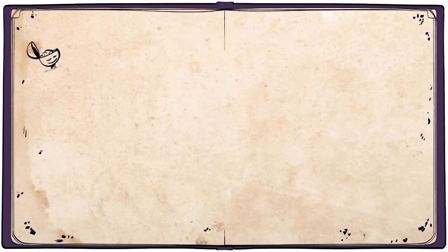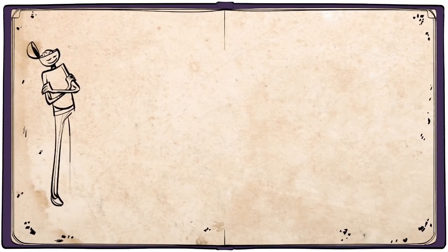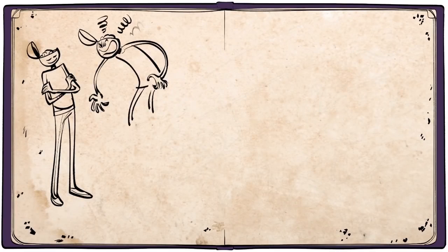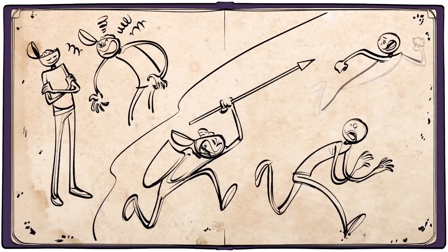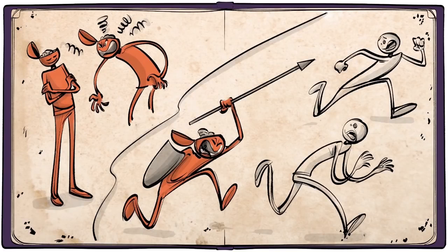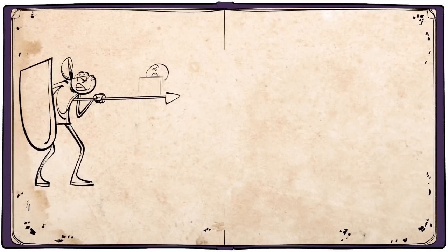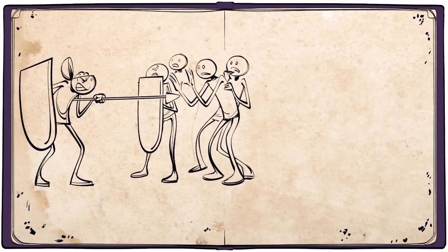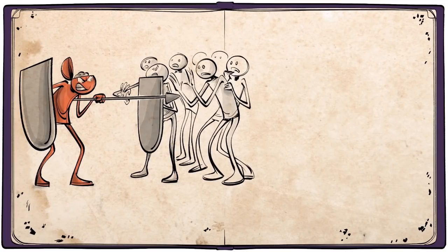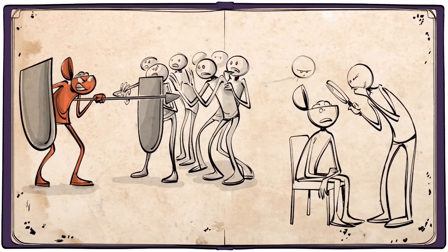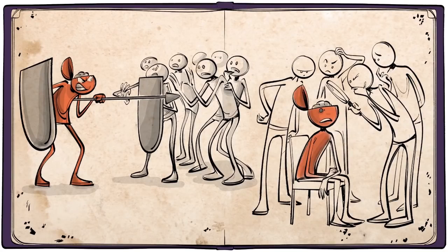In all this, the stupid person is self-satisfied and, being easily irritated, becomes dangerous by going on the attack. For that reason, greater caution is called for when dealing with a stupid person than with a malicious one. If we want to know how to get the better of stupidity, we must seek to understand its nature.